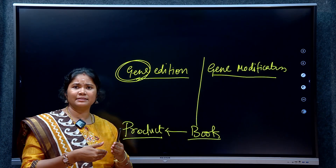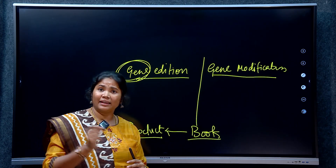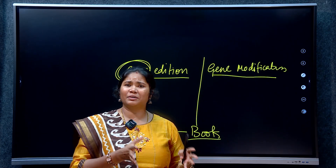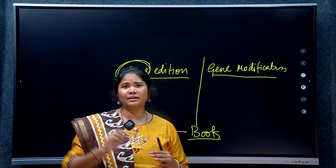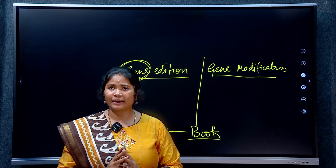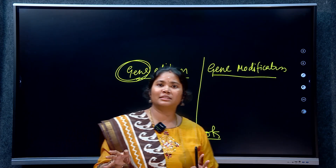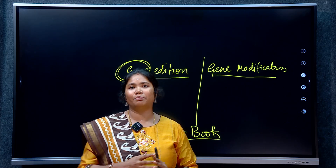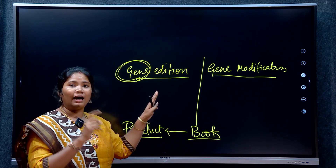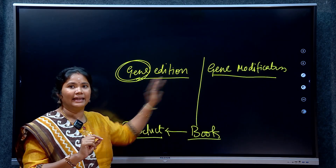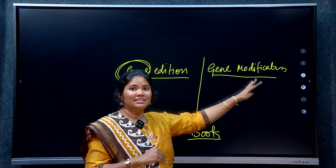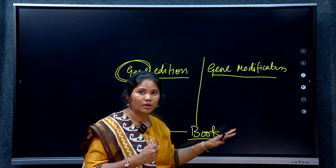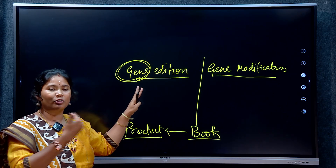Think of it like a book with different pages. If there is an unwanted instruction, mutation, or unwanted character in the book, the product will express it. In gene editing, we cut and remove that unwanted instruction — that is gene editing. In gene modification, we modify by introducing genes from the same organism or a different organism as a genetically modified organism.